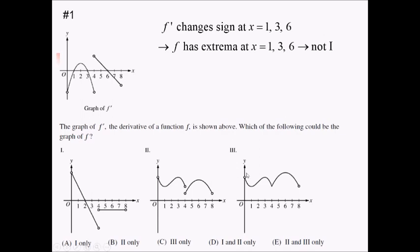Graph 3 also has extrema at 1, 3, and 6. Now graph 3 also has an extreme at 4, and there is a sign change in the graph at x equals 4. Graph 3 could still be the graph that goes with this f prime, but then graph 2 — the original function doesn't even exist there, and maybe that's what's causing this non-differentiable spot. So that's not enough to choose between graphs 2 and 3.